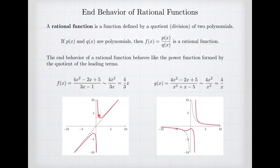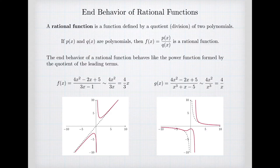You can see in the graph that I've got the graph of my original f of x — this rational function. Notice it has a vertical asymptote somewhere. The line 4/3 x is shown, and you can see that as x goes to positive infinity or negative infinity, my function behaves like 4/3 x. There's a small offset related to something called a slant asymptote, but for this video, all I care about is understanding end behavior.